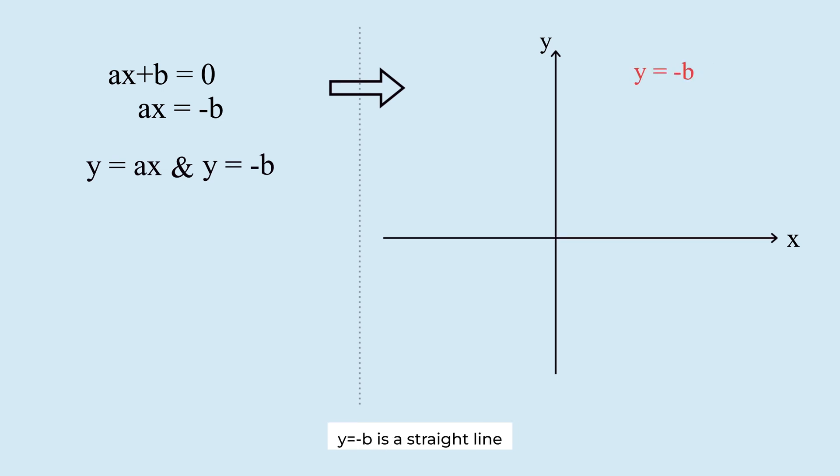y equals minus b is a straight line parallel to the x-axis passing through the point 0 comma minus b. If b is greater than 0, minus b is less than 0. The graph lies below the x-axis. If b is 0, then y equals 0. The graph is the x-axis. If b is less than 0, the graph lies above the x-axis.